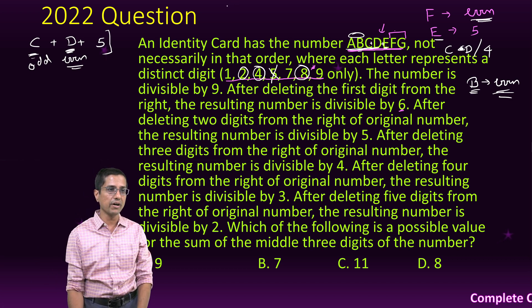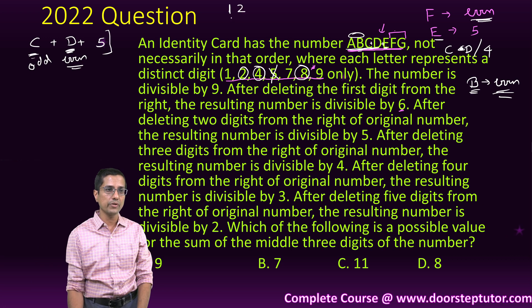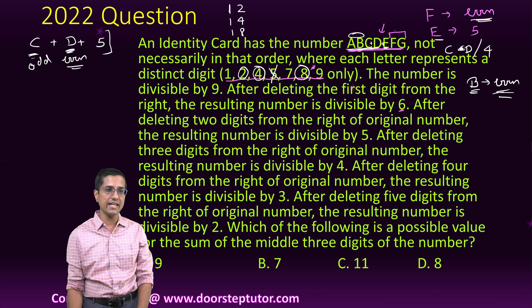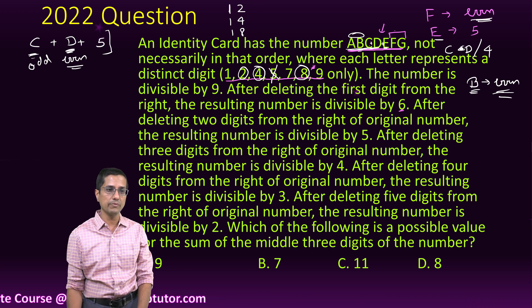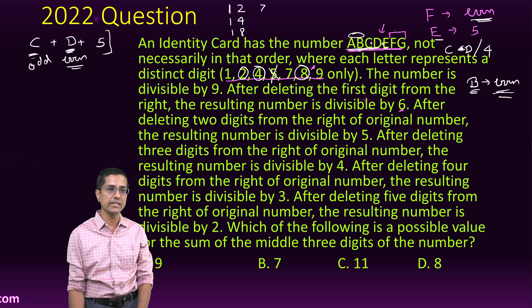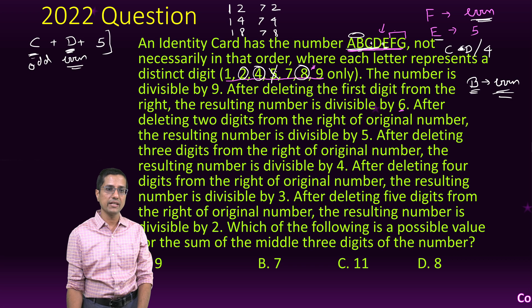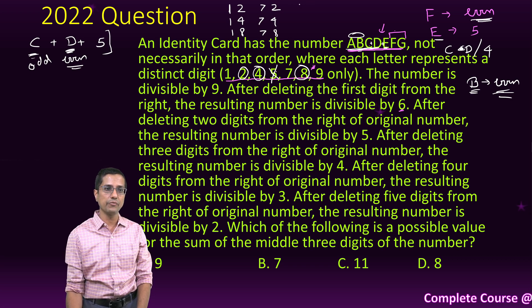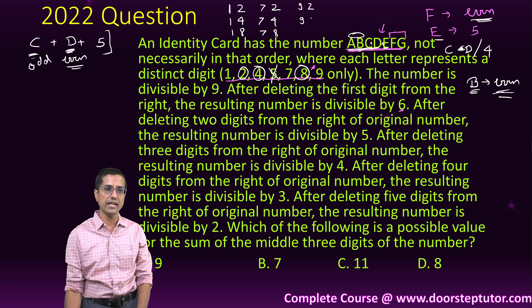First we take C as 1 and then D can be 2, then 14 and 18. Then we take next C - 5 we cannot take. So C can be 7. So it is 72, 74, and 78. Then of course 9 can be there. So we have 92, C can be 9, 94, and 98.